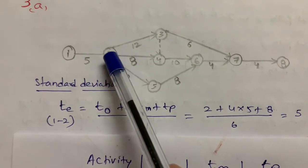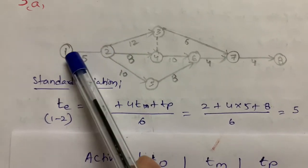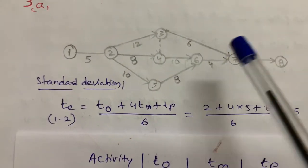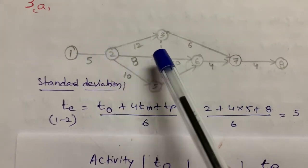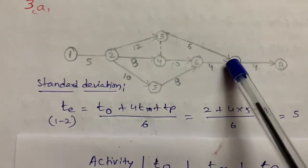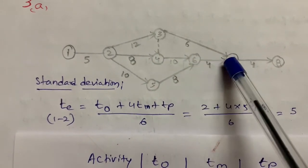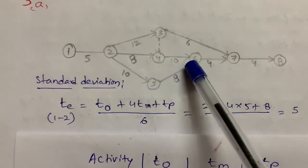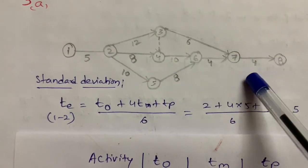1-2-3-7-8 is one path. 1-2-4-6-7-8 is one path. And 1-2-5-6-7-8 is another path.